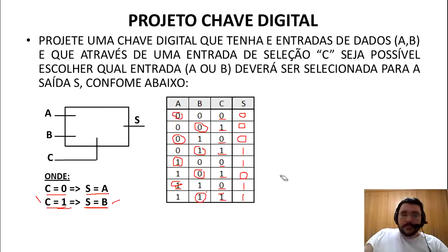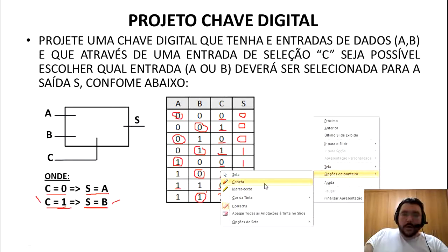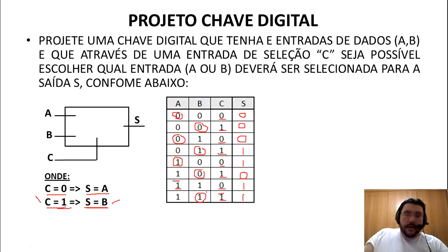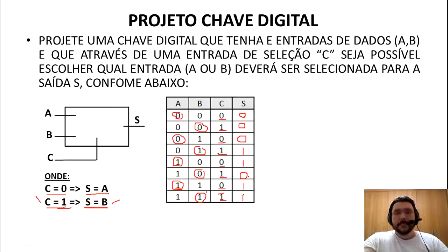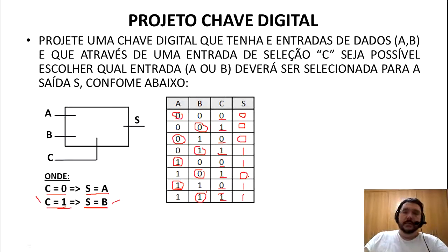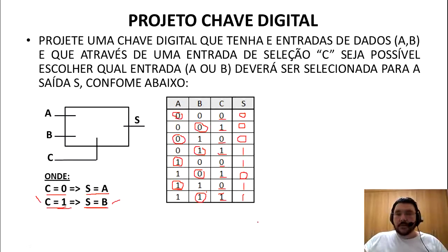Chegamos na tabela verdade da chave digital. A partir dessa tabela verdade, levantamos a expressão lógica. Analisamos cada combinação e chegamos na saída. Agora identificamos onde a saída S é igual a 1 — há quatro casos onde S=1 — pois quando ela é zero, não importa para a expressão.